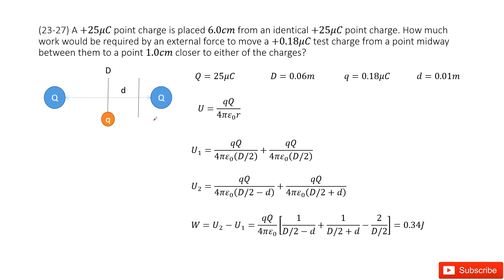Chapter 23 is about electric potential. So you can see we have two identical point charges, capital Q, 25 microcoulombs.